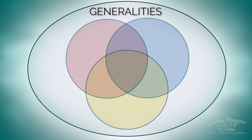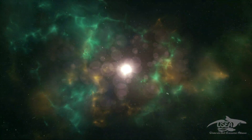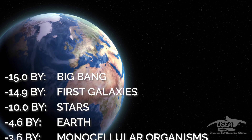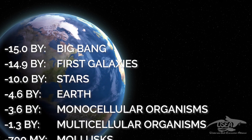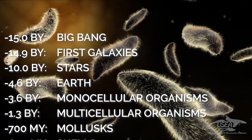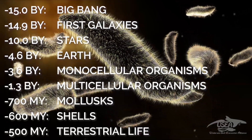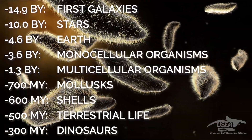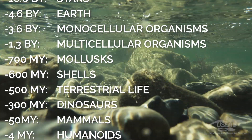First, some generalities about the evolution of Earth. Everything started with the Big Bang almost 15 billion years ago. The first galaxies occurred 100 million years later. Then planet Earth started to form about 4.6 billion years ago. Life on Earth occurred 1 billion years later — it was monocellular organisms. And we had to wait until 1.3 billion years ago to see the pluricellular organisms.